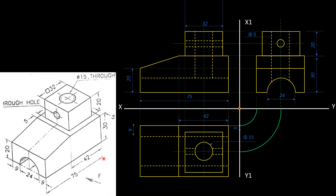We have two dimensions of our figure. We have to set the dimensions in the orthographic view and distribute them equally across the three different figures. We will distribute the dimensioning equally among all three views.